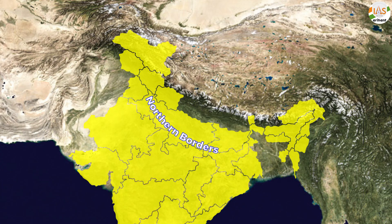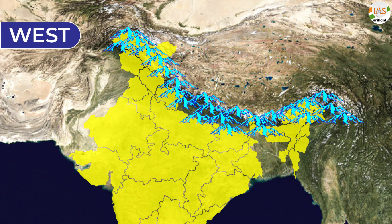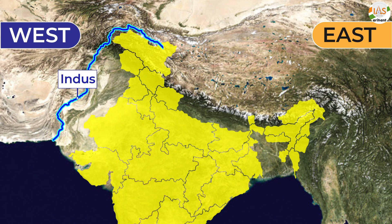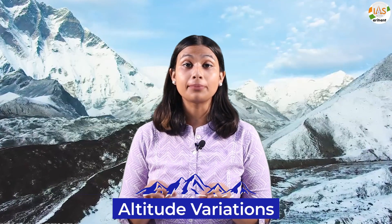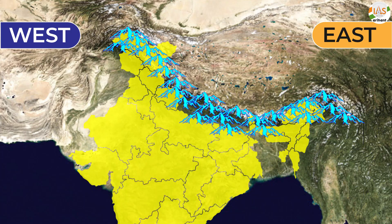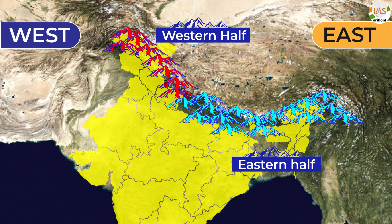Stretching over northern borders, the Himalayas is a high, young, cold mountain range which goes from west to east — from Indus to Brahmaputra — covering about 2400 km of distance. If you talk about altitude variations, the eastern half is more than the western half.